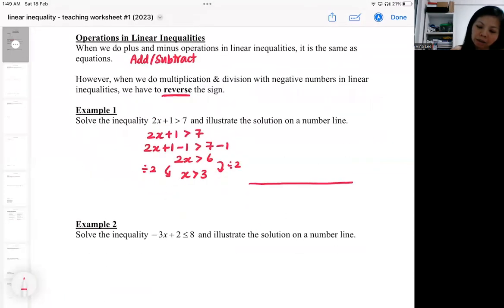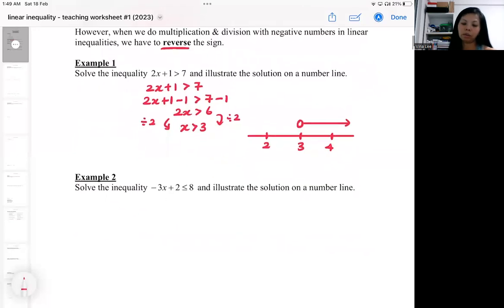You want to display this on the number line. Usually I will draw a number line that comprises of 3. So maybe here I will draw 2, 3, 4. Greater than 3 will be an empty circle and it will be the right arrow. If you need a bit more on this, you can watch the SEC2 videos.